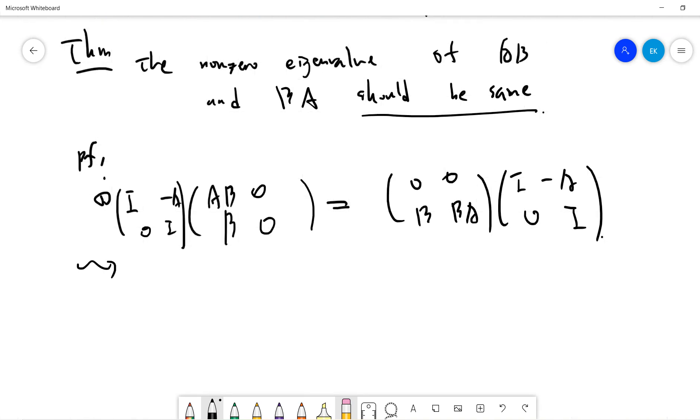This tells you that since this one is invertible, the characteristic polynomial of this matrix and this matrix is the same. So characteristic polynomial of AB, zero, B, zero is the same as characteristic polynomial zero, zero, B, BA.